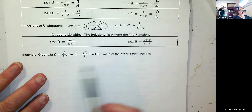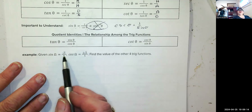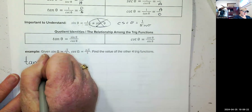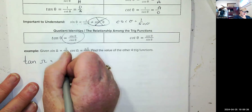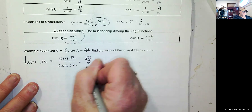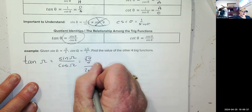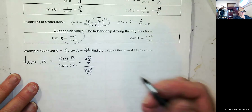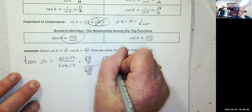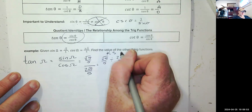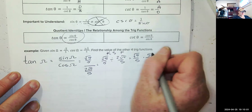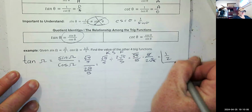We're going to use these to find the four trig functions, given sine equals √5/5 and cosine equals 2√5/5. Tangent of the angle equals sine over cosine, which is (√5/5) divided by (2√5/5). Using keep-switch-flip: (√5/5) × (5/(2√5)), which reduces to 1/2. So the tangent is 1/2.